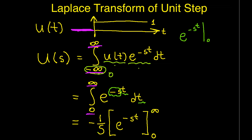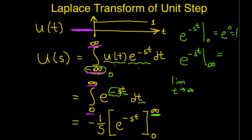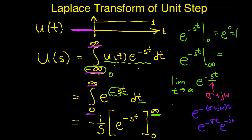e to the minus s t evaluated at 0: I plug 0 in for t and get e to the 0, which is 1. What about e to the minus s t evaluated at infinity, the upper limit of integration? This is the limit as t approaches infinity of e to the minus s t. s is a complex number — its real part is sigma and its imaginary part is j omega. So I can write e to the minus s t as e to the minus (sigma + j omega) times t, which I can break into the product of e to the minus sigma t times e to the minus j omega t.